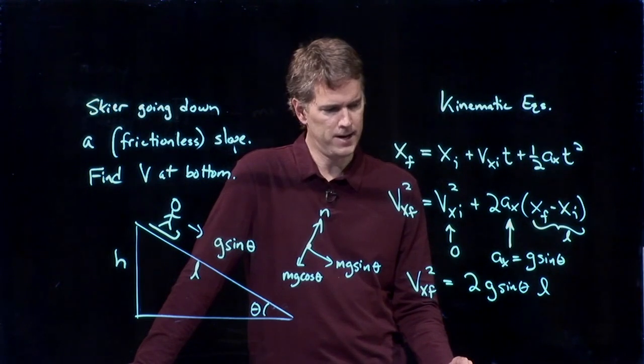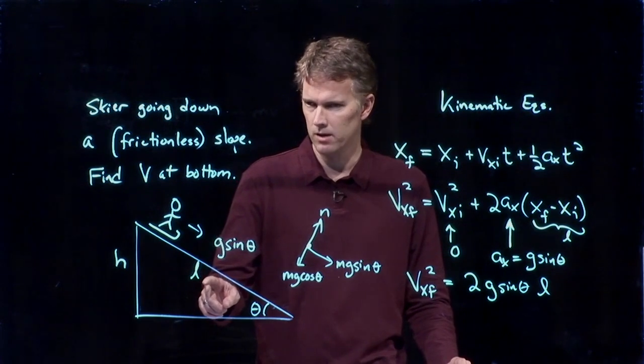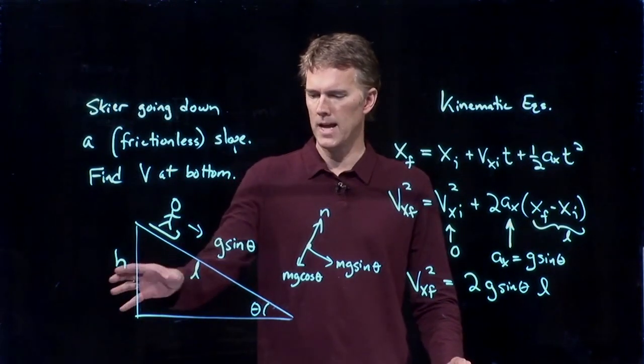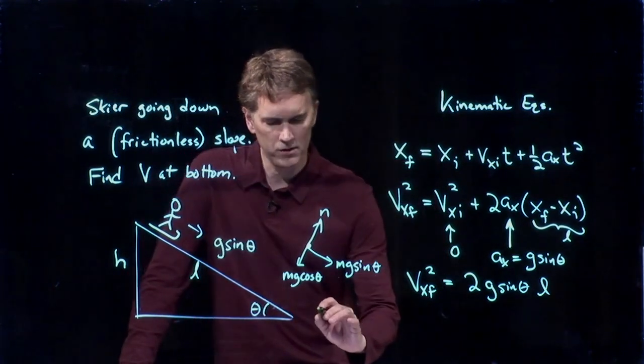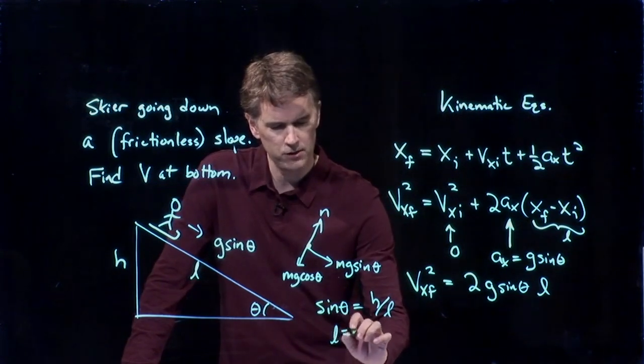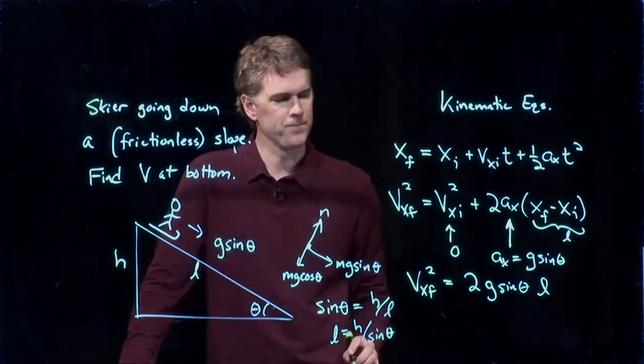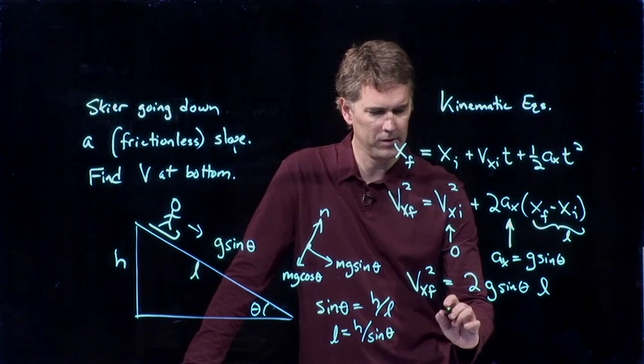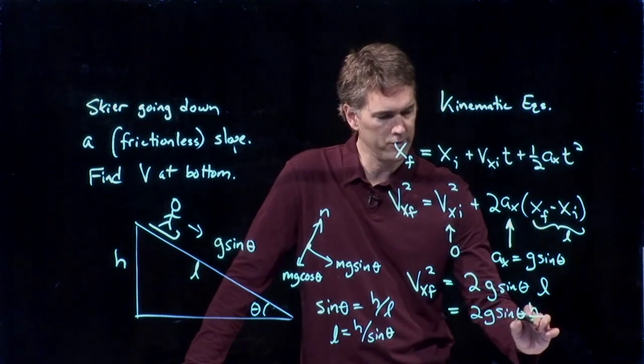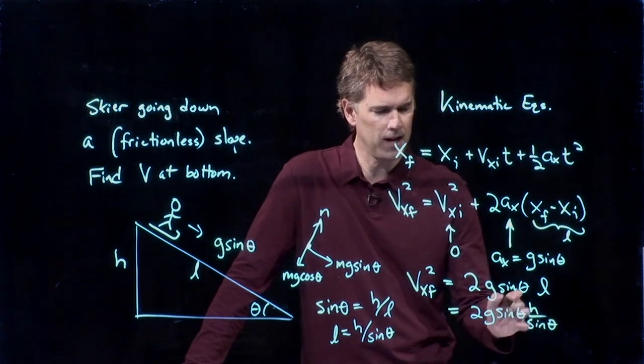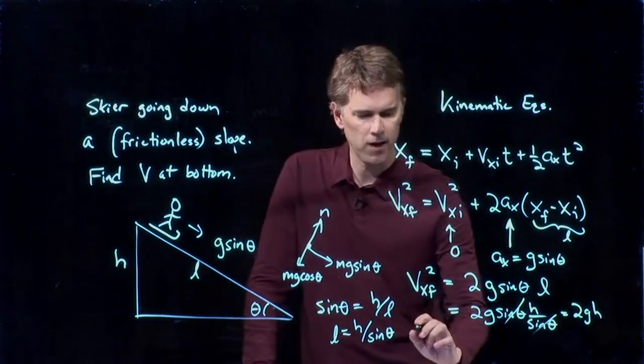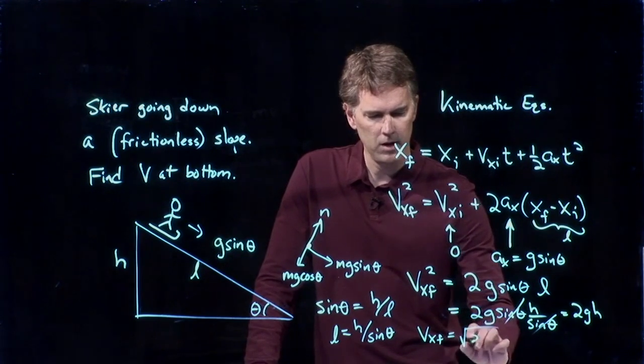All right. That looks pretty good. But we don't know maybe what L is. Maybe we were only given h. But of course, there is a relationship between h and L. It's that angle theta. And what we can say is sine theta equals h over L. And so I can solve this for L. L is equal to h over sine theta. And so now when I stick that in here, look what happens. I get 2g sine theta times L, which is h over sine theta. And the sines cancel out. And so that whole thing just becomes 2gh. And now I can calculate this final speed. Vxf is the square root of 2gh.